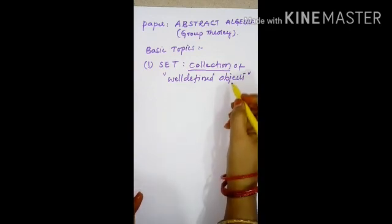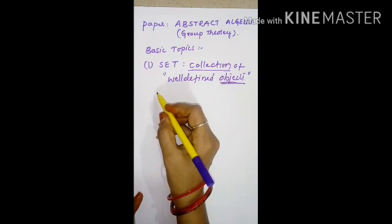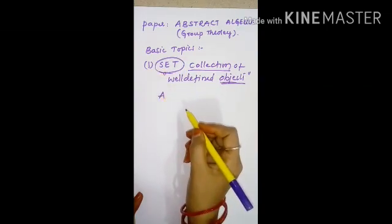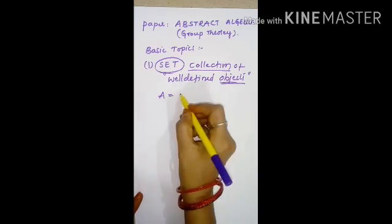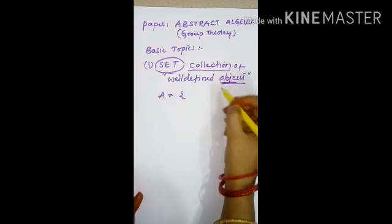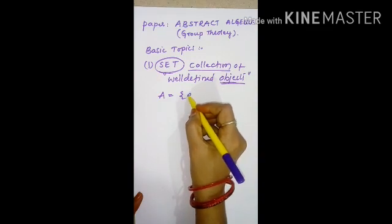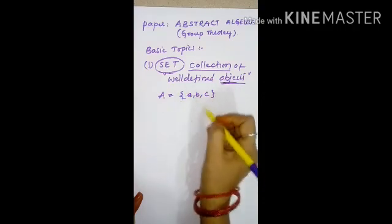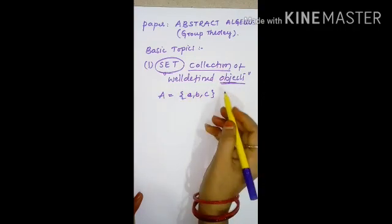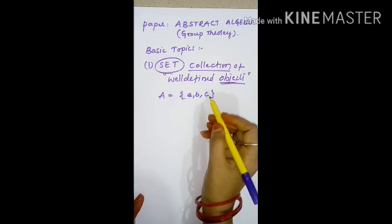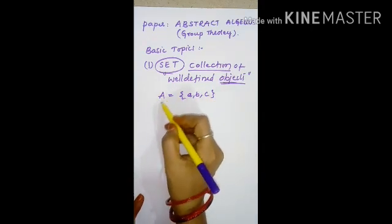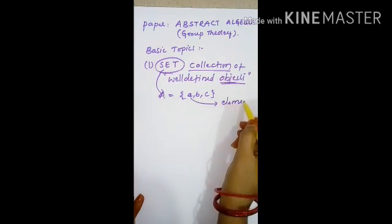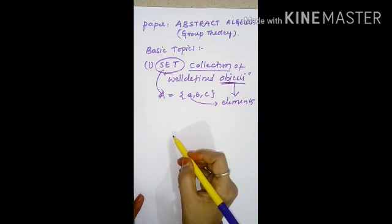Objects means elements. We denote sets by capital letters and objects by small letters. The notation is curl brackets. Capital letters indicate sets and small letters indicate elements.